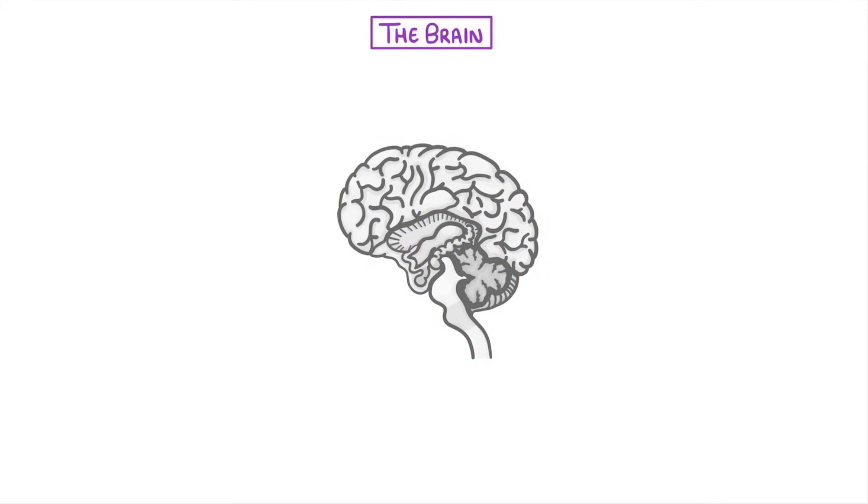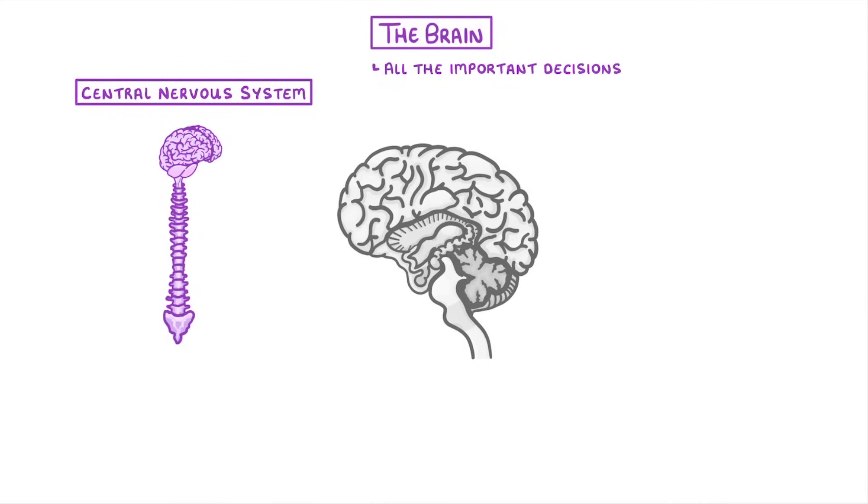The first thing to say is that the brain and spinal cord together make up the central nervous system. But apart from simple reflexes, it's the brain that makes all the important decisions. So we'll focus just on the brain.